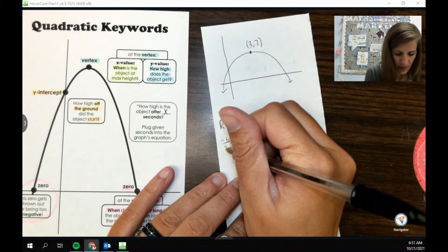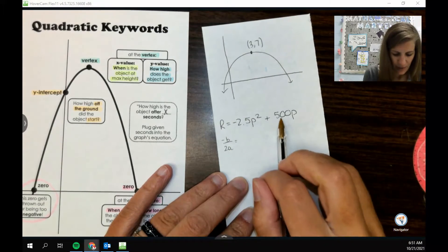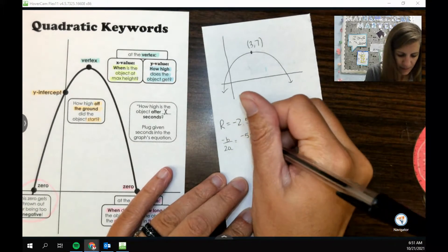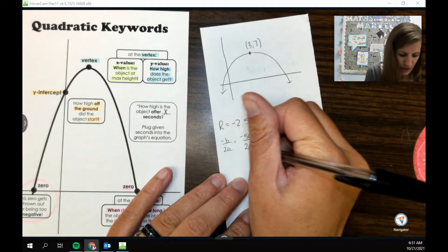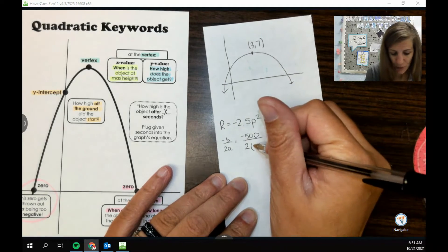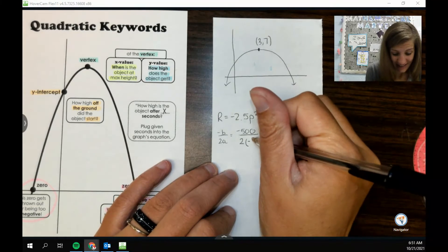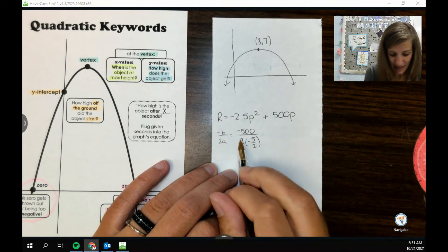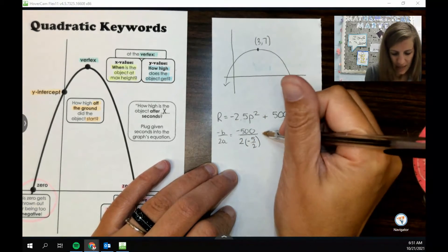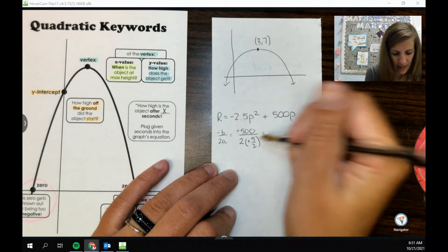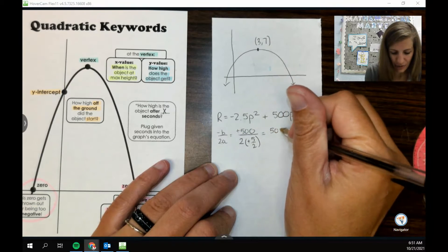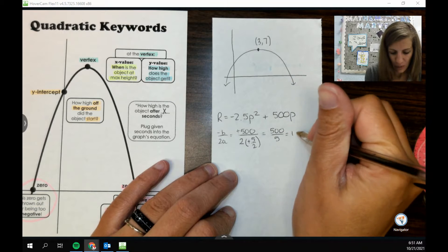If I want to find the vertex, that's when we had to do our little baby equation, the negative b over 2a. So we'd have negative 500 over 2 times a which is negative 2.5, or 5 over 2. It's kind of nice mainly because the twos will divide out, and so really this ends up being, and the negatives will divide out, this will be 500 over 5 for 100.